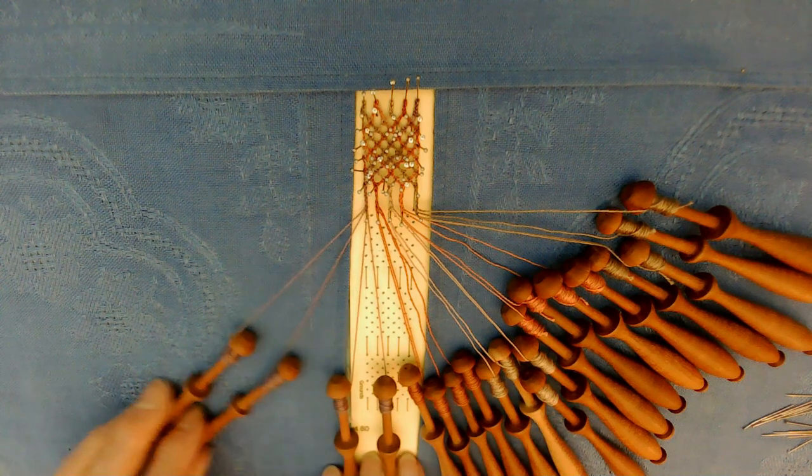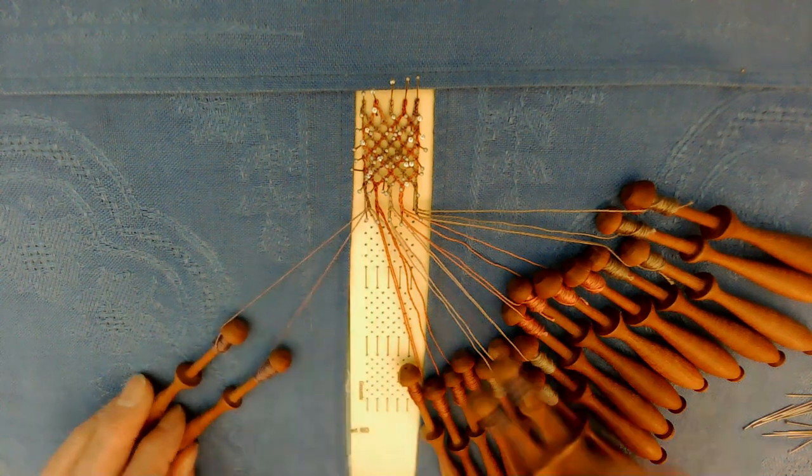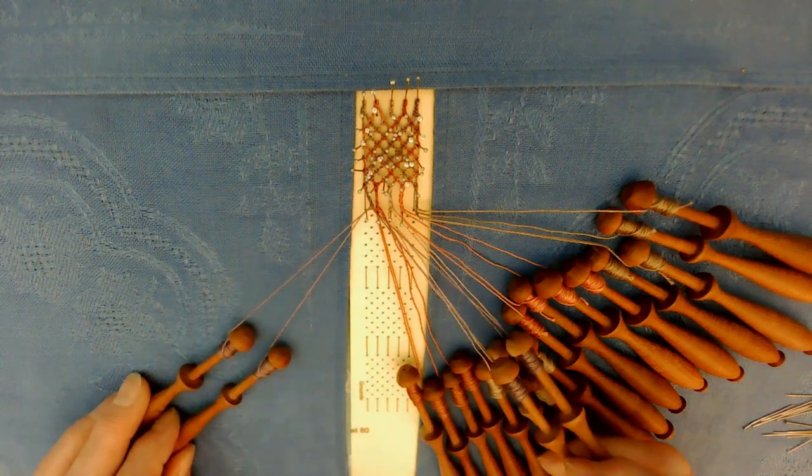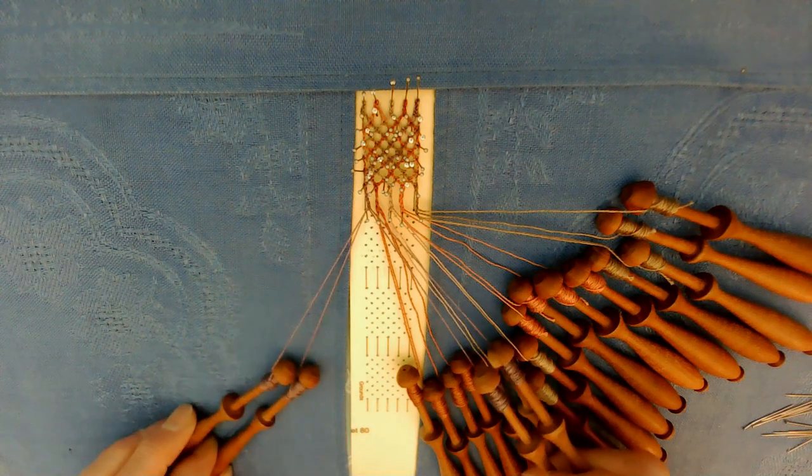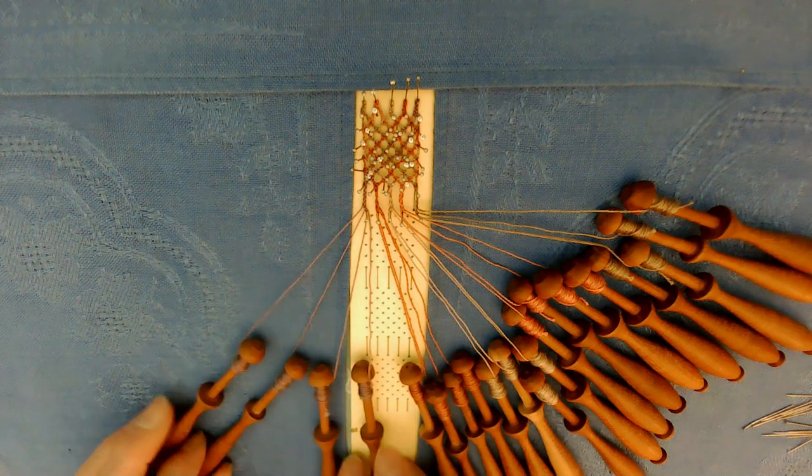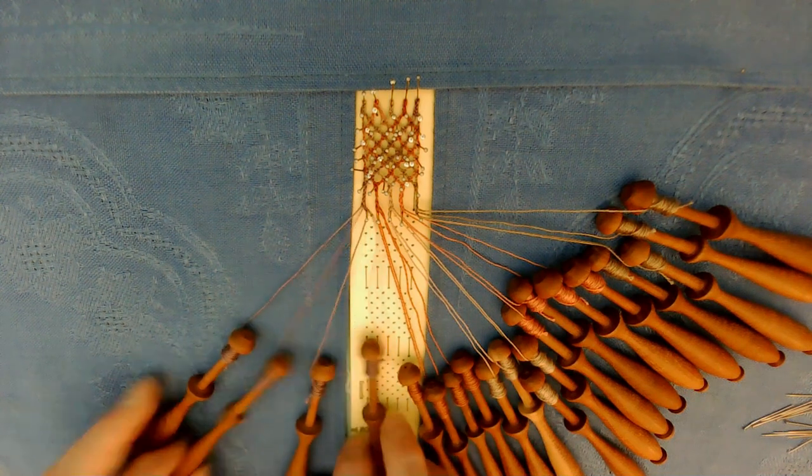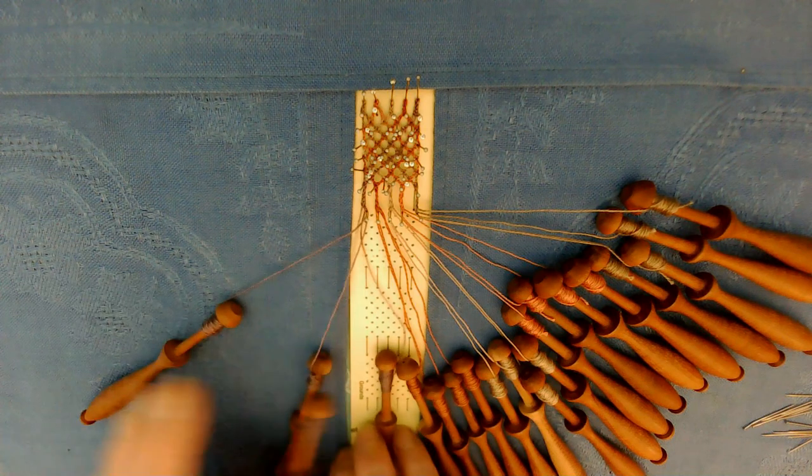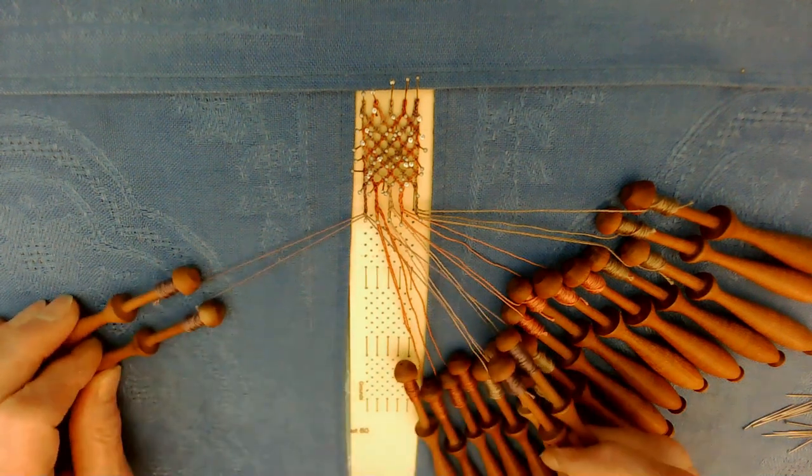To begin the stitch, I have placed the last pin at the bottom of the plat. In order to keep it in place and secure, I need to close the pin. Let's just do a cloth stitch: cross, twist, cross, which will keep it tight.